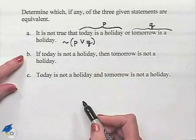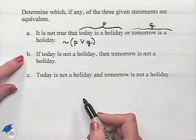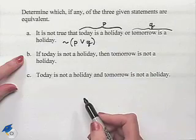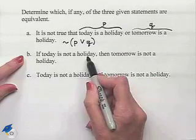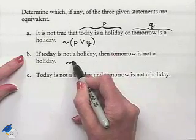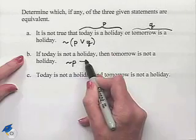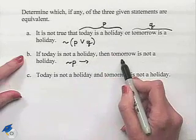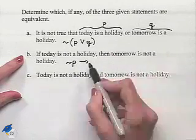Part B: If today is not a holiday, then tomorrow is not a holiday. Today is not a holiday is going to be the negation of P. This is a conditional statement where the then part is going to be the negation of Q.